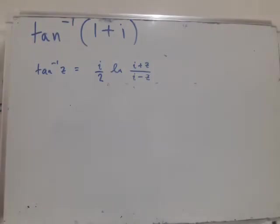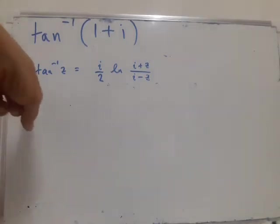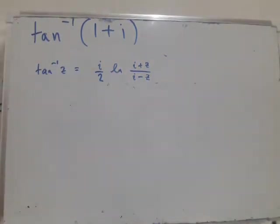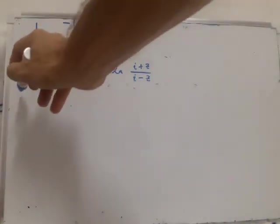We're now going to find inverse tan of 1 plus i. So we have this formula for inverse tan of z, so we just plug in z equals 1 plus i.